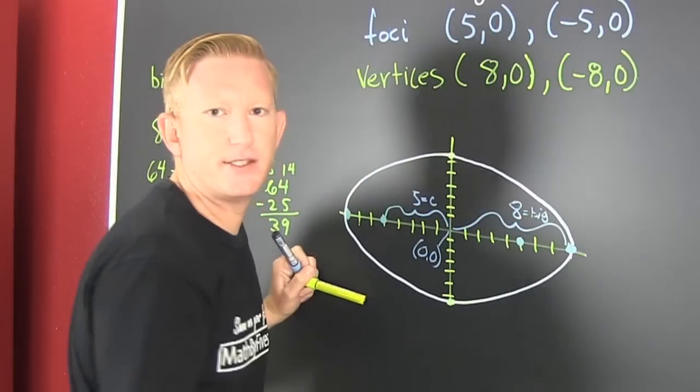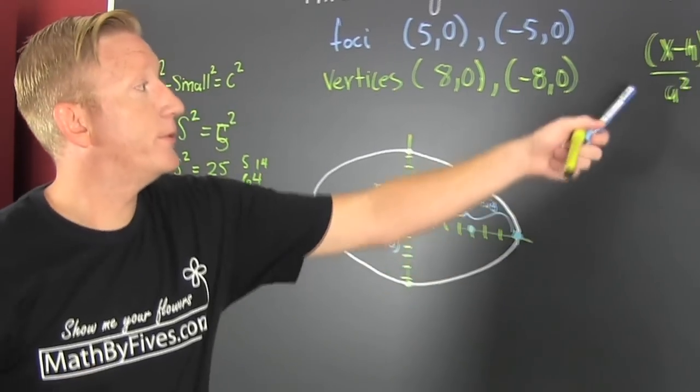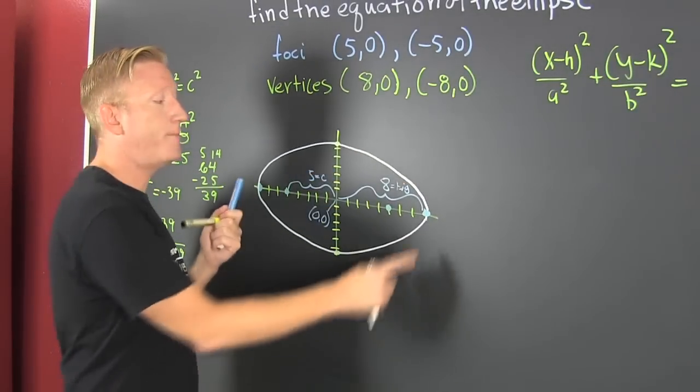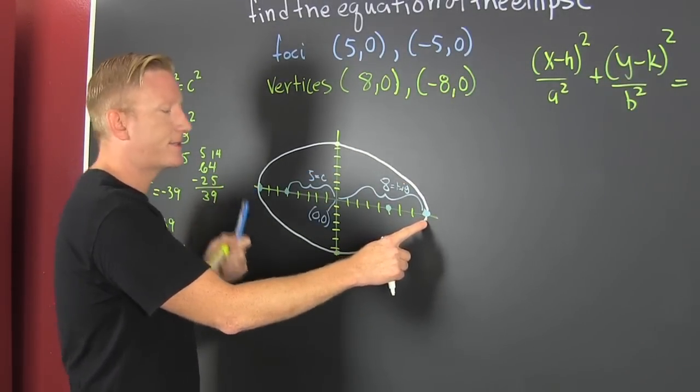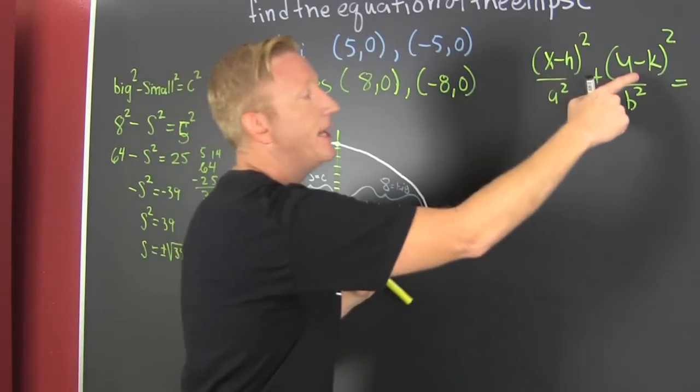They didn't ask us to graph it, but I think that's nice so that you can get the picture of what we're trying to do here. Boom. Our major is X. So this is X. What's our center? (0,0). So our H and our K is (0,0).